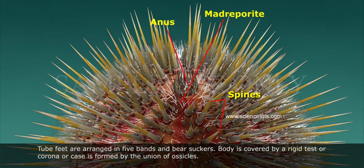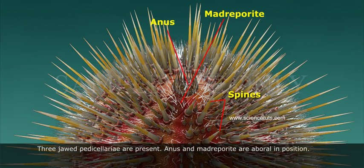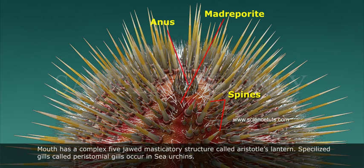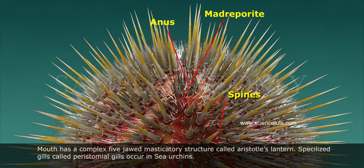Three-jawed pedicellariae are present. Anus and madreporite are aboral in position. Mouth has a complex five-jawed masticatory structure called Aristotle's lantern. Specialized gills called peristomial gills occur in sea urchins. Larval form is called Echinopluteus.